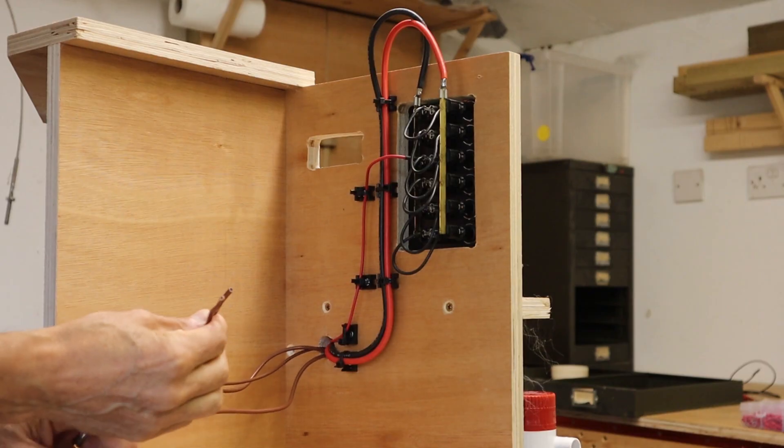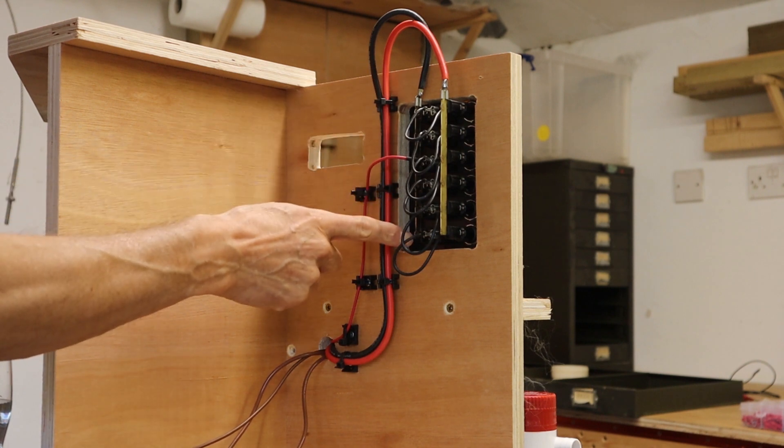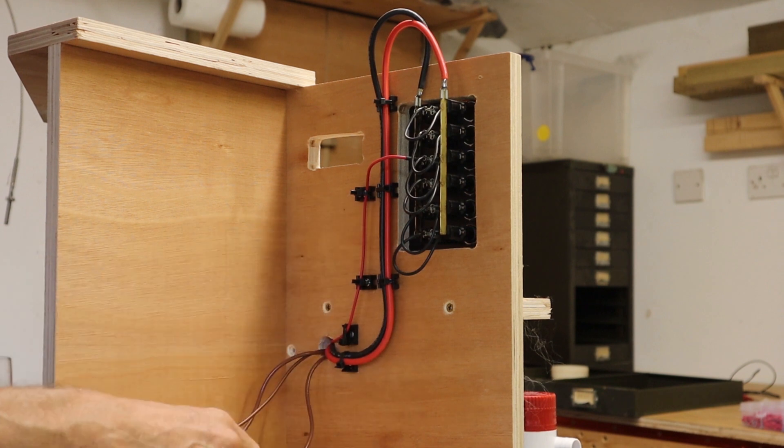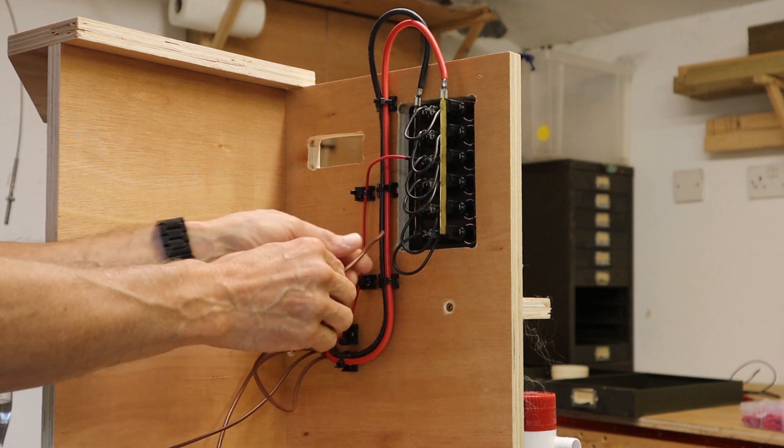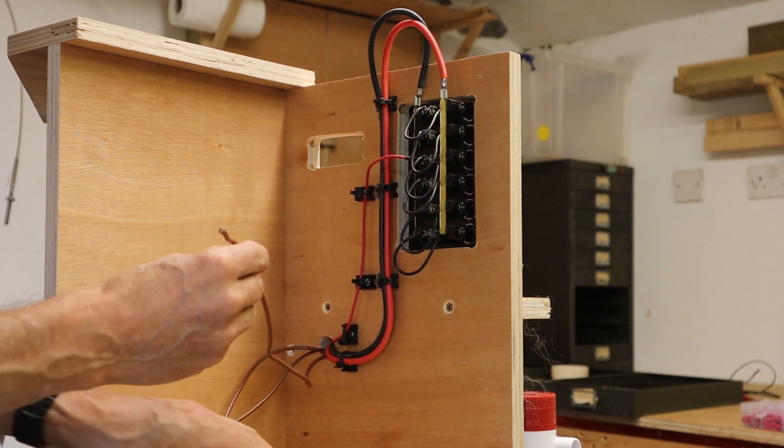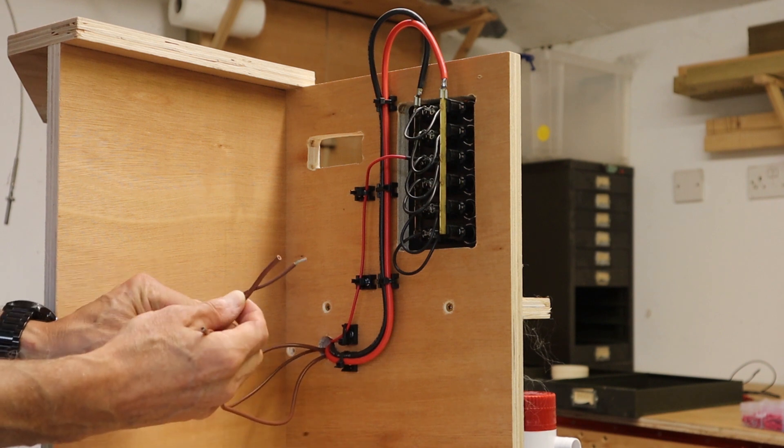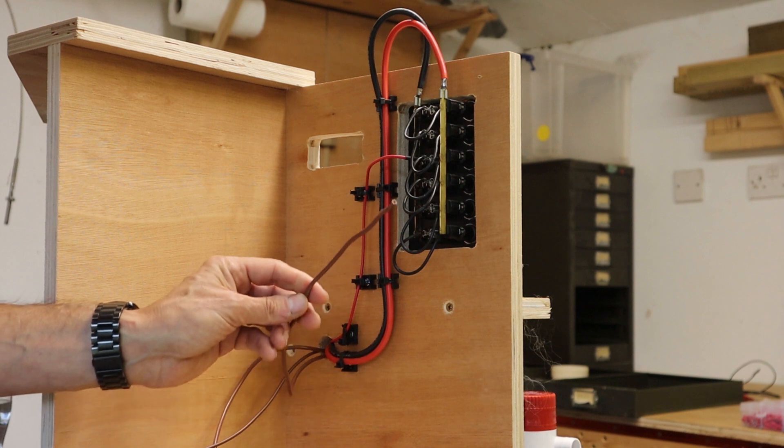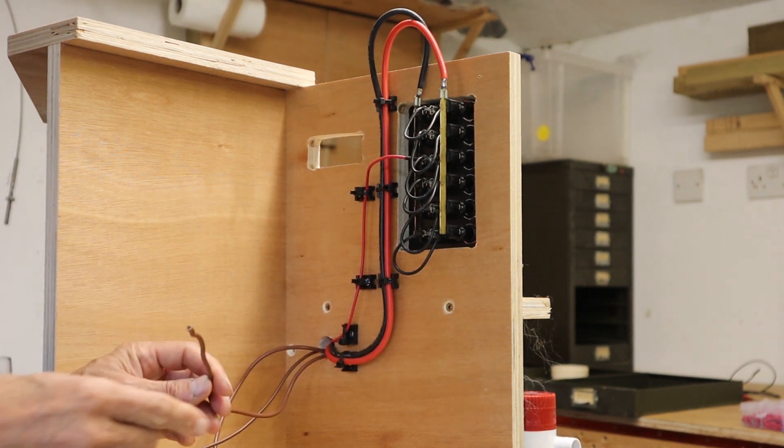I think the easiest way to think of this is the positive power source is coming from the switch panel here and that's got to go through the float switch. So one of the float switch wires is going to be connected to this switch panel and then the other wire from the float switch is going to be connected up to the bilge pump. So we will start with the connection of one of the float switch wires to the switch panel.